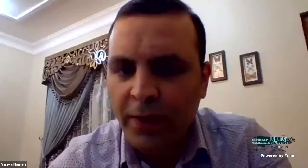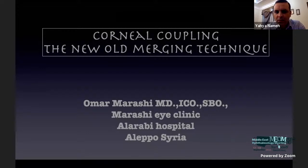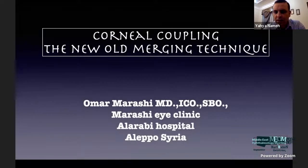Regarding sulcoflex calculation for the first case, there is a particular calculator on the Rayner lens website — I think it is a ray-trace-based calculator. You enter the data and the sulcoflex calculator gives you the IOL power.